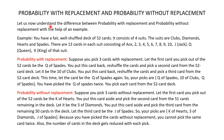Let us understand the difference with the help of an example. You have a fair well-shuffled deck of 52 cards. It consists of 4 suits: clubs, diamonds, hearts, and spades. There are 13 cards in each suit — Ace, 2, 3, 4, 5, 6, 7, 8, 9, 10, Jack, Queen, and King of each suit.